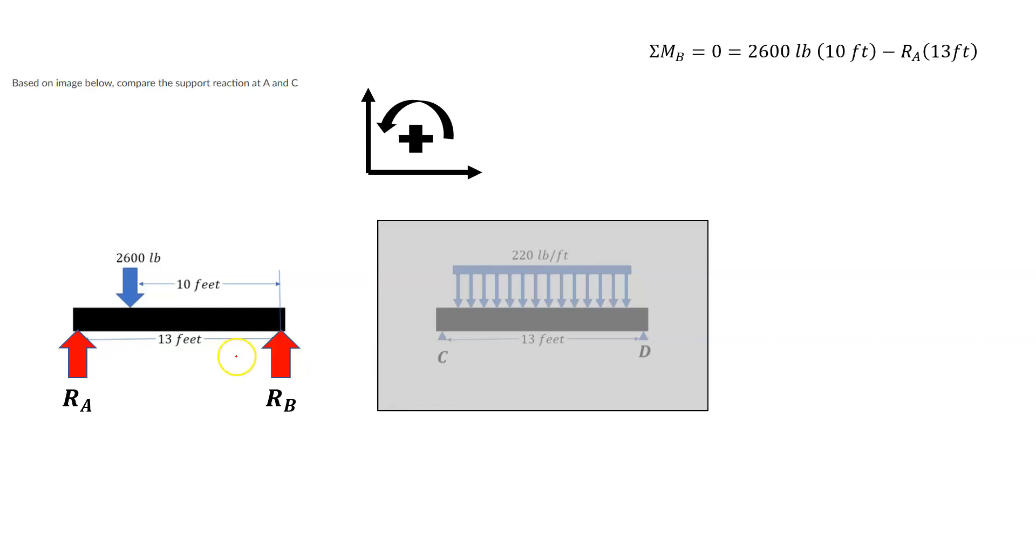So if we take a moment going about B, we can eliminate an unknown from the equation. The distance from B to B is zero, so it just makes that one drop out, the support reaction drop out. So that means we're going to create a moment from the 2600 pound applied load that is going to be going counterclockwise, and a moment that's being created by the support reaction at A that's going clockwise. So we've got a load that's positive, and a load that is moving in the negative direction.